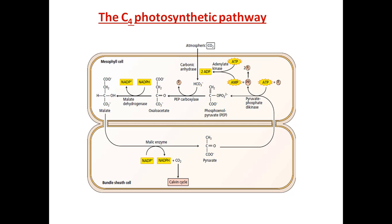The detailed steps include: carboxylation, transport of malate to bundle sheath cells, decarboxylation, and transport of pyruvate back to mesophyll cells for regeneration of phosphoenolpyruvic acid. Carbon dioxide, in the presence of carbonic anhydrase, is converted to bicarbonate. This involves ATP and AMP — one ATP molecule (three phosphate groups) and one AMP (one phosphate group), giving four phosphate groups total.